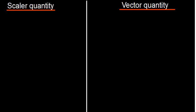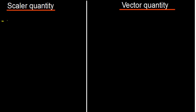These are simple things which you guys already know. A scalar quantity is basically a physical quantity which has got only magnitude but no direction. It has got only magnitude.